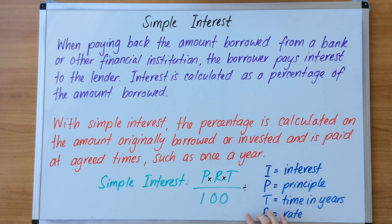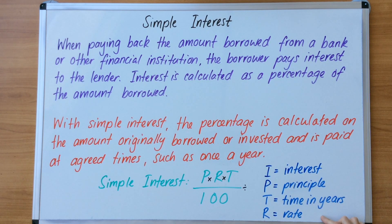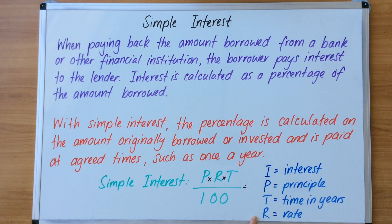All these letters will be combined in these rules, starting with simple interest first. This is what you need to know — when you read a question you're going to need to identify these four things, then slot them in and substitute them into the rule.